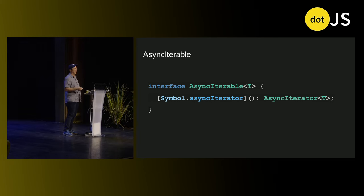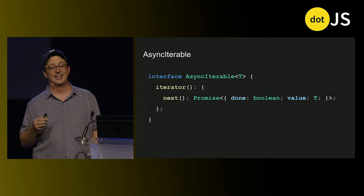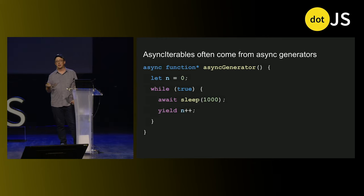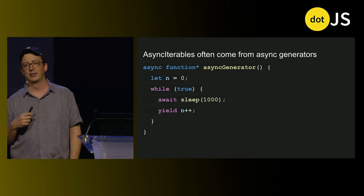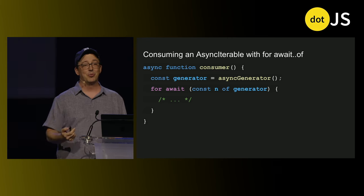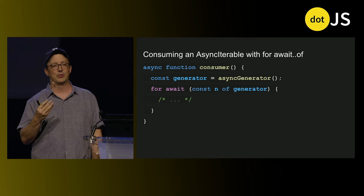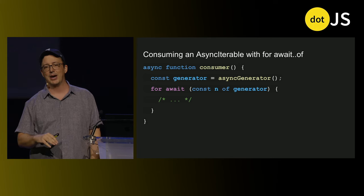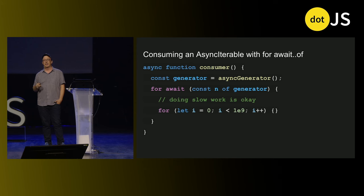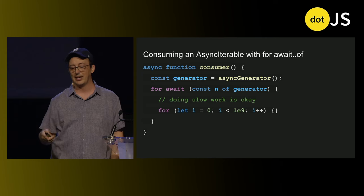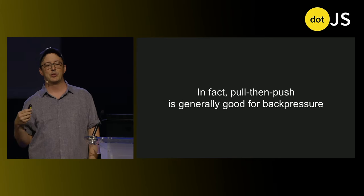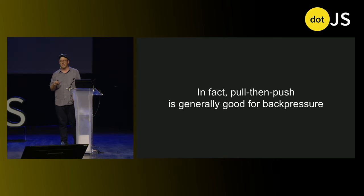Async iterable looks like this: you have an async iterator function that returns an async iterator, which looks exactly like a regular iterator except it gives you a promise to that iterator result. You can create one in JavaScript right now using async function star, and consume one with for-await loops — it will wait at the top, pull that promise out, wait for it to resolve or reject, then enter the body of the for loop. This is nice for back pressure: it gives the consumer time to get back to the top of the loop and say 'I'm ready for another value.' All pull-then-push types are very good for back pressure — you only request the data when you know you can handle it.